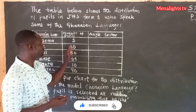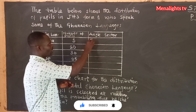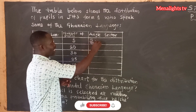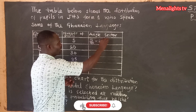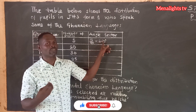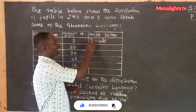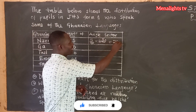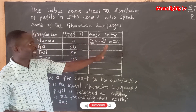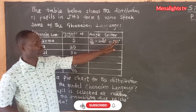We take the first one, Nzema, which has 5 students. So 5 over the total 90, times 360 degrees. 90 goes into 360 four times, so 4 times 5 gives us 20 degrees. The angle sector of students who speak Nzema is 20 degrees.